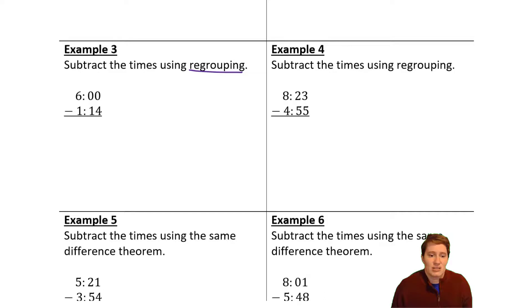So since this is six hours minus one hour, 14 minutes, it's the idea of we need more minutes here. So we're going to take an hour away. We're going to change it into minutes. There's 60 minutes in an hour, and then we're going to subtract like what we normally do. So 60 minus 14.